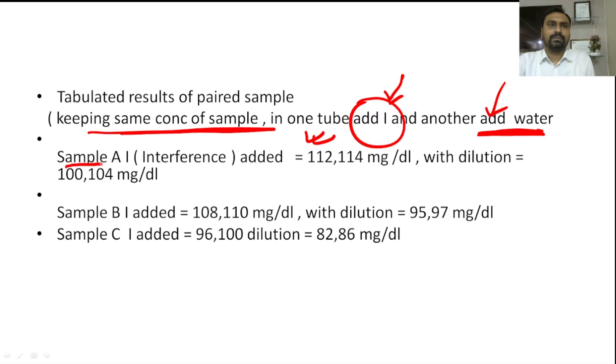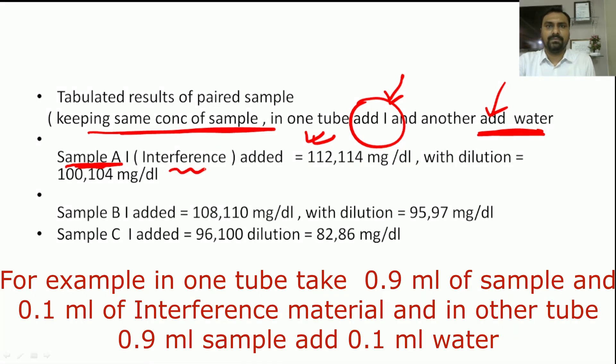Suppose we have sample A and we add the interference. We have to duplicate the results to avoid any random error. So we get two values, 112 and 114. And with the same concentration of sample, we add same amount of dilution that will be water. Then we get the result 100 and 104.